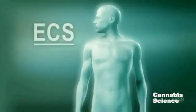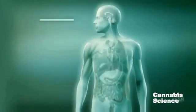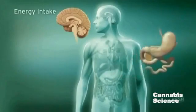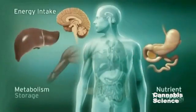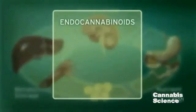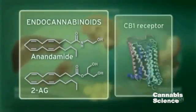The endocannabinoid system, or ECS, influences multiple physiologic processes. This intricate system modulates energy intake, as well as nutrient transport, metabolism, and storage. The ECS regulates these processes through endogenous ligands, such as anandamide and 2-arachidonylglycerol, and the CB1 receptor.